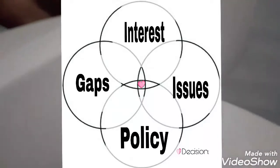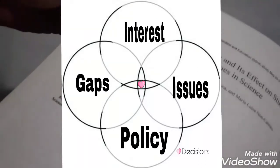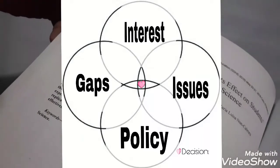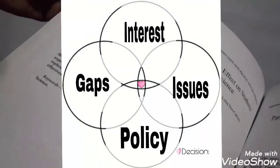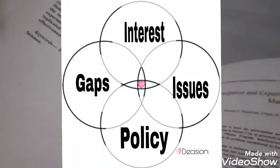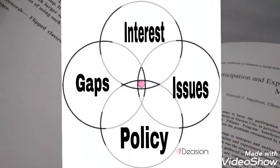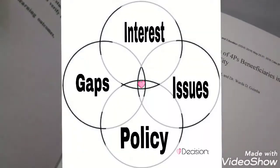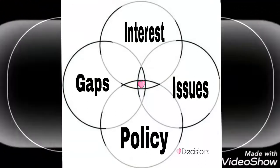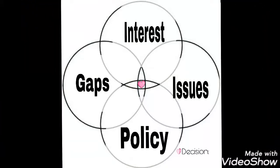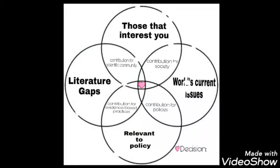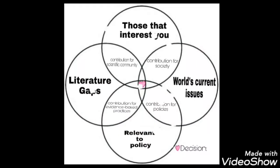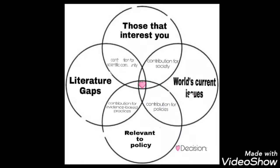Fourth, find a gap in the literature. In this fourth concept of the model, there are many ways you can find a gap, but I will discuss that in another video because it requires a lengthy discussion. So those are the four considerations to find out what researchable topics you can work on. Now we are going to consider the weighted decision-making part of the model — the inner portion.